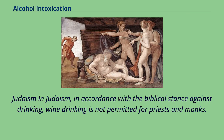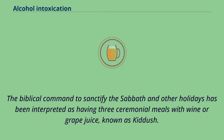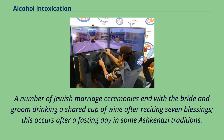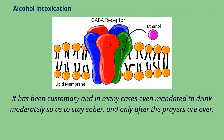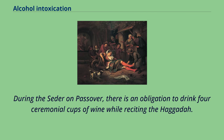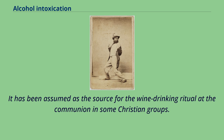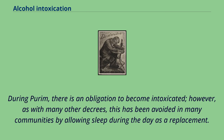In Judaism, in accordance with the Biblical stance against drinking, wine drinking is not permitted for priests and monks. The Biblical command to sanctify the Sabbath and other holidays has been interpreted as having three ceremonial meals with wine or grape juice, known as Kiddush. A number of Jewish marriage ceremonies end with the bride and groom drinking a shared cup of wine after reciting seven blessings. It has been customary and in many cases mandated to drink moderately so as to stay sober, and only after the prayers are over. During the Seder on Passover, there is an obligation to drink four ceremonial cups of wine while reciting the Haggadah. During Purim, there is an obligation to become intoxicated, however this has been avoided in many communities by allowing sleep during the day as a replacement.